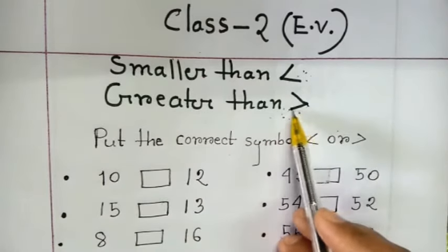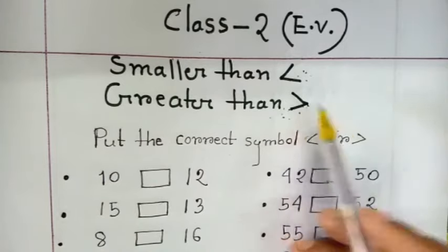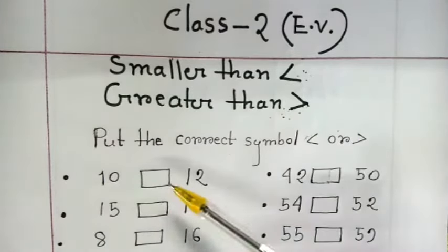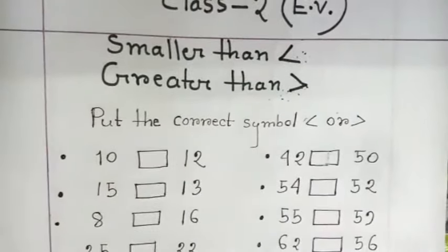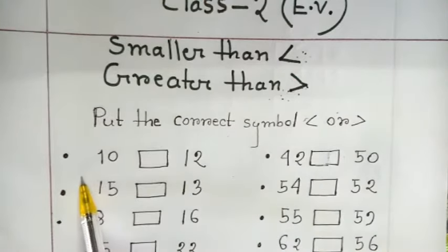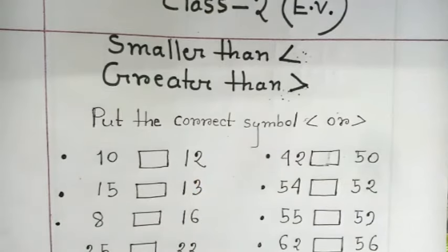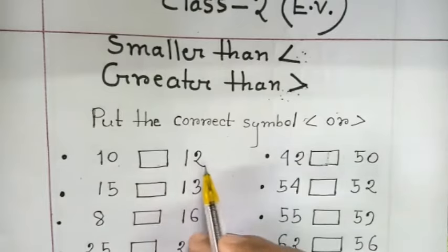So let's read this with the sign. Always remember we read from left to right. So let's do it. 10 dash 12.